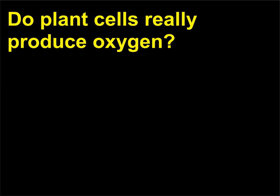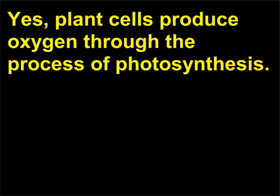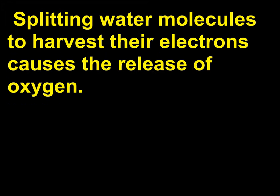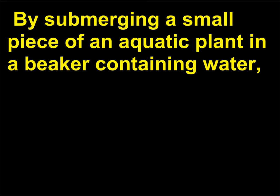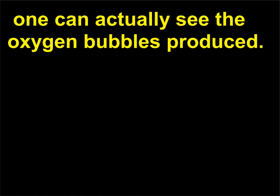Do plant cells really produce oxygen? Yes, plant cells produce oxygen through the process of photosynthesis. Splitting water molecules to harvest their electrons causes the release of oxygen. By submerging a small piece of an aquatic plant in a beaker containing water, one can actually see the oxygen bubbles produced.